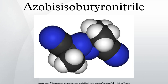Azabisysobutyronitrile (AIBN) is an organic compound with the formula (CH3)2C(CN)2N2. This white powder is soluble in alcohols and common organic solvents but is insoluble in water. It is often used as a foamer in plastics and rubber and as a radical initiator.